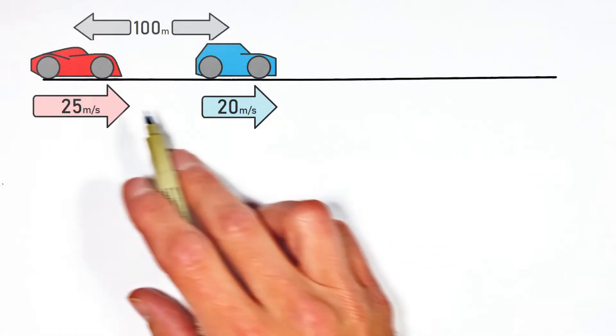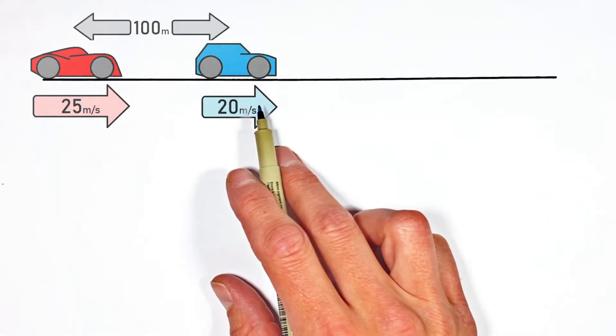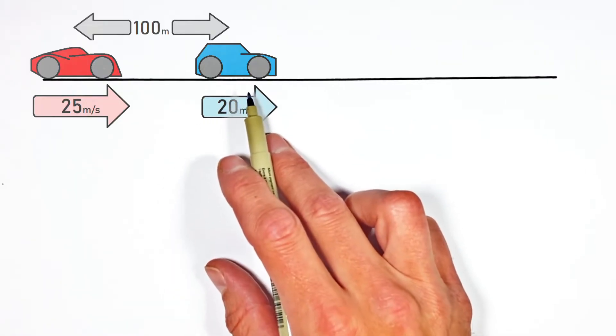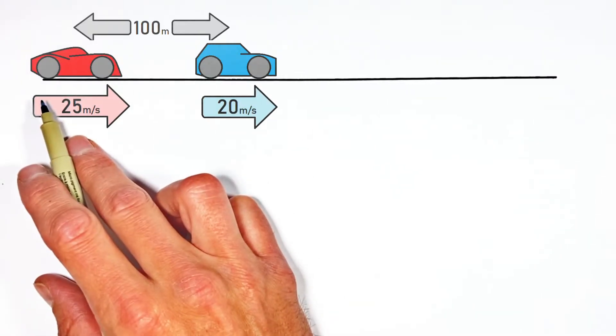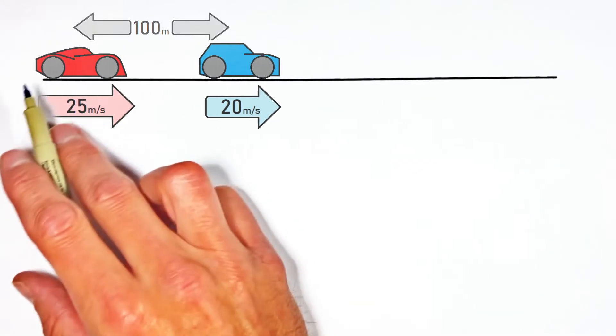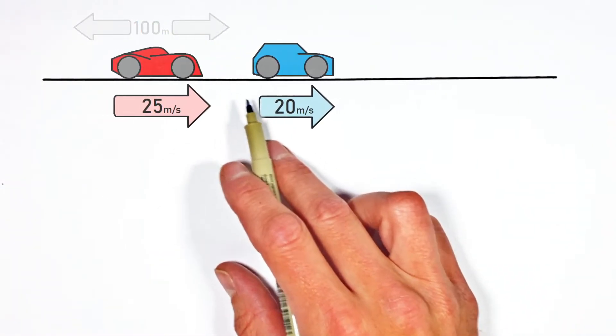Today we're taking a look at two cars which are both driving down the road at two different velocities. Now the slower car is starting ahead of the faster car. And given enough time, this faster car is going to catch and overtake the slower car.